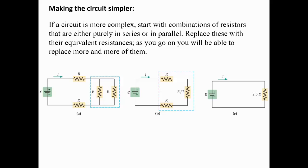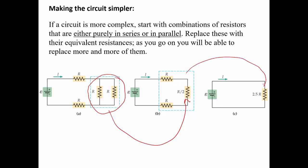Here's a trick for simplifying circuits before applying mathematics: simplify one combination at a time. For example, given a complex circuit, first find the effective resistance of any two resistors in parallel, then you can clearly see the remaining resistors in series. Replace the parallel pair with a single equivalent resistor, and then apply Ohm's law to solve for voltage and current. Always simplify one step at a time.